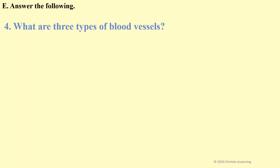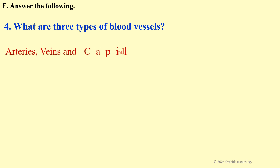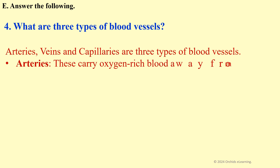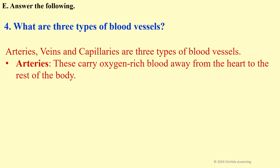What are three types of blood vessels? Arteries, veins, and capillaries are three types of blood vessels. Arteries: these carry oxygen-rich blood away from the heart to the rest of the body.